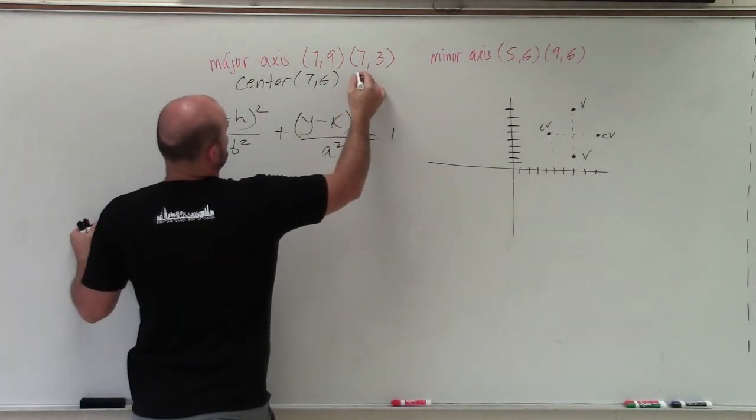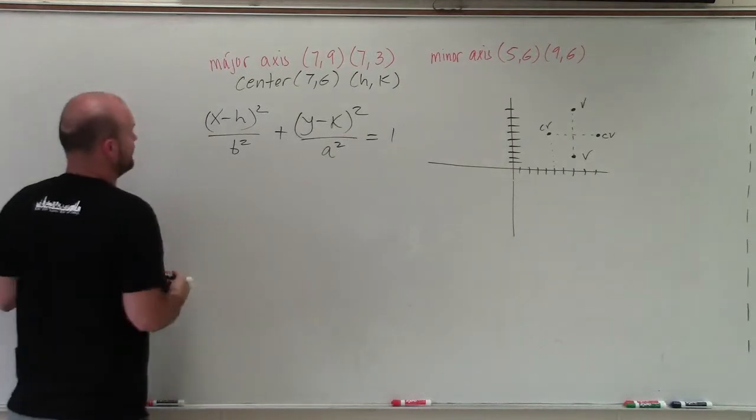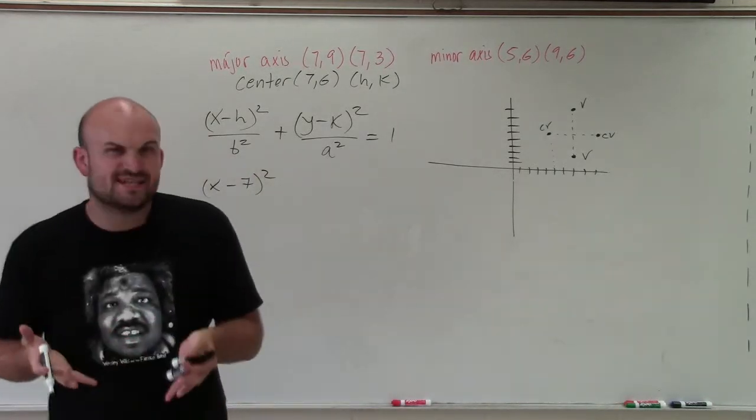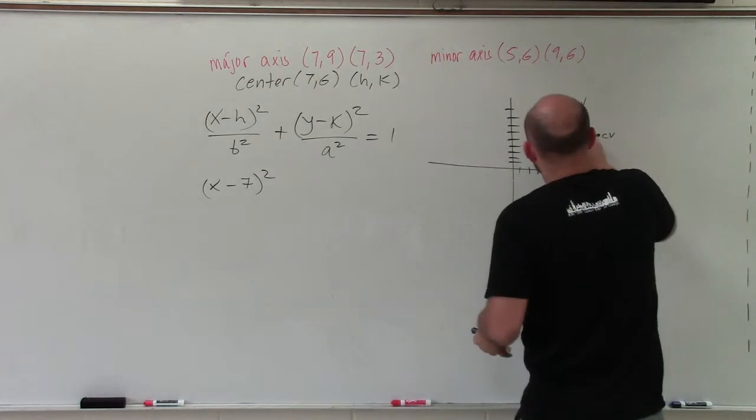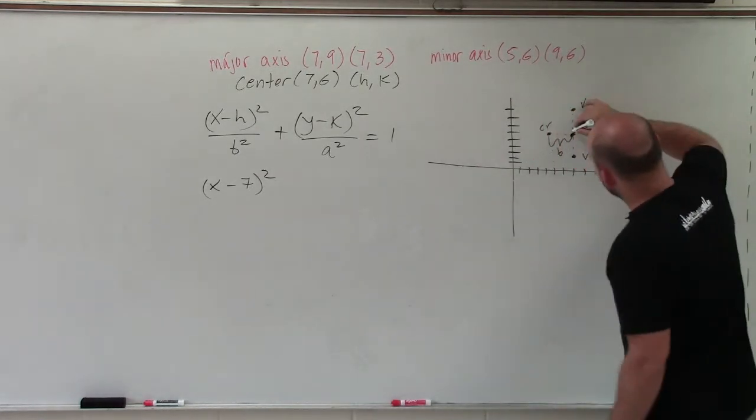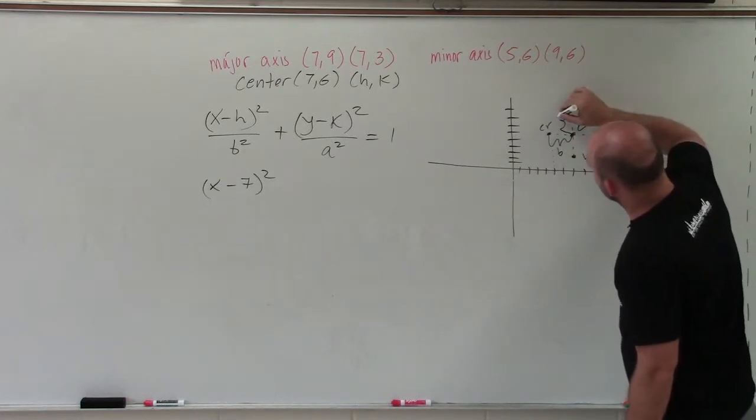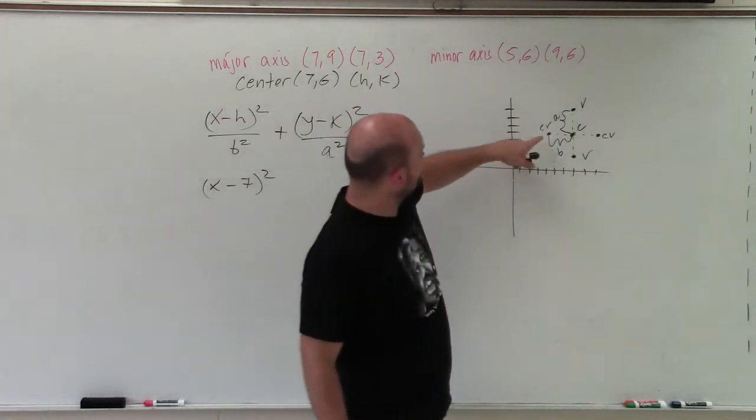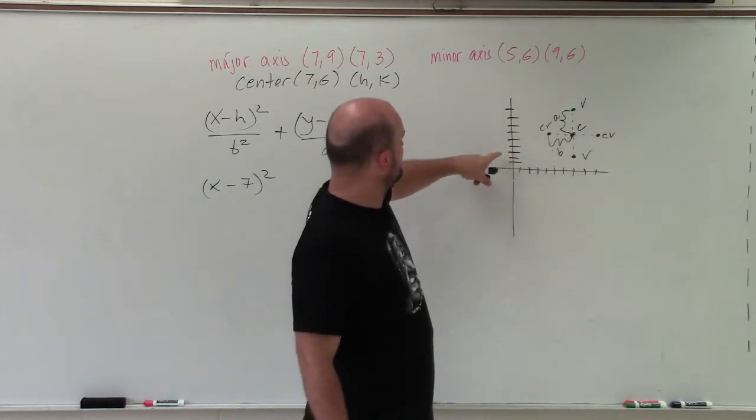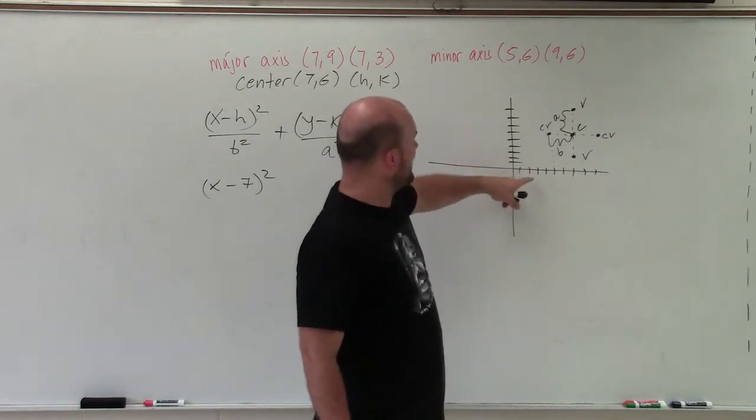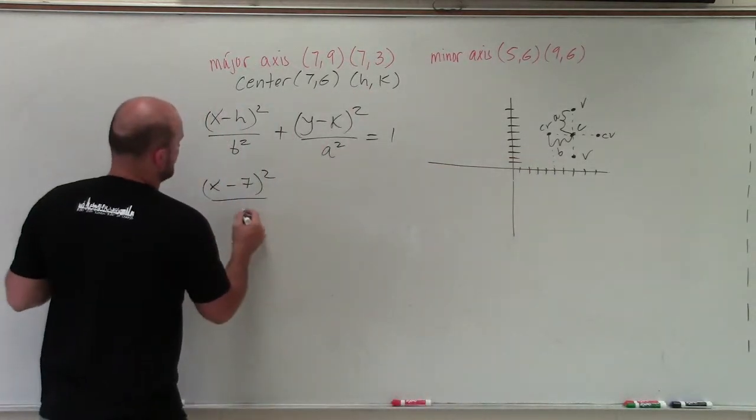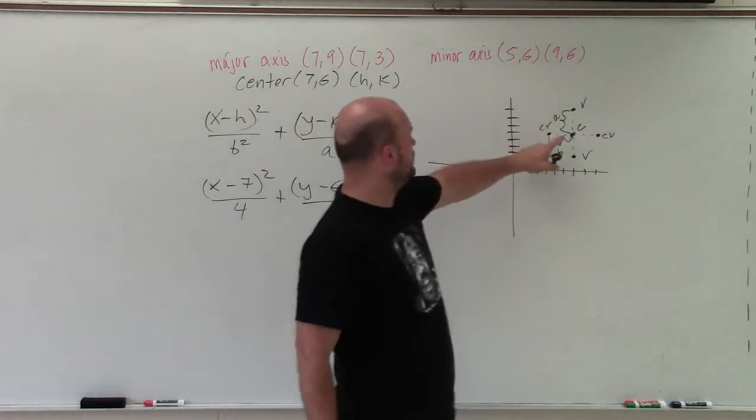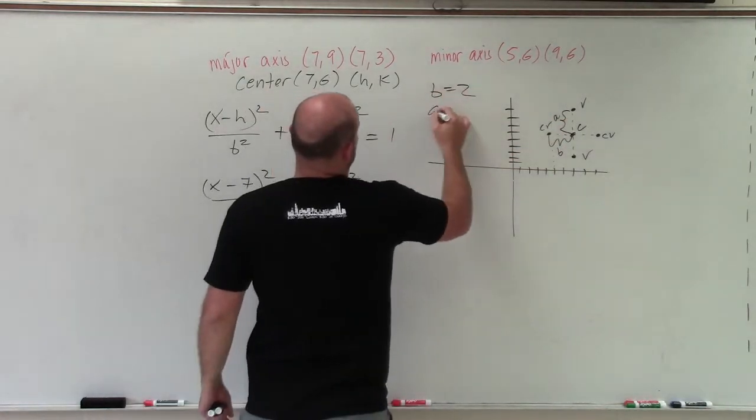So now let's just enter the information we know. Remember, center is (7,6), which is also in our form of h comma k in our general form. So therefore, I do x minus seven squared over b squared. Now, what exactly is b squared? b is the distance from the covertice to the center. And a is the distance from the vertice to the center. So the distance b is from five to seven, so b is going to be two. Two squared equals four. Plus y minus six squared all over a squared, which would be three squared. So let's write those out: b equals two, a equals three.